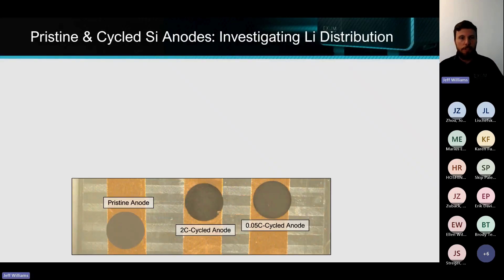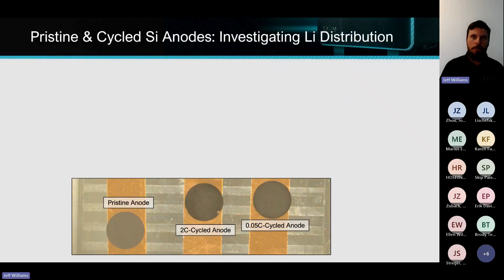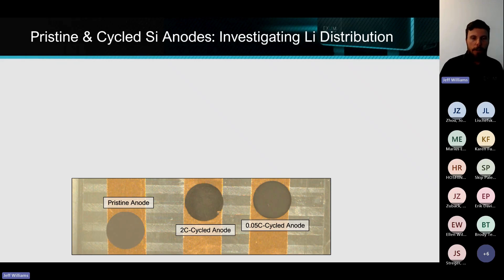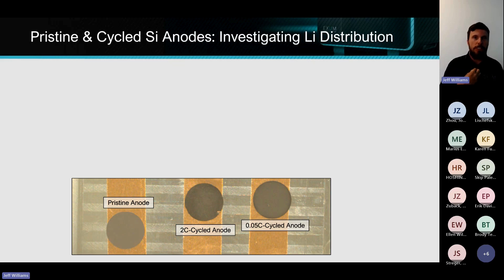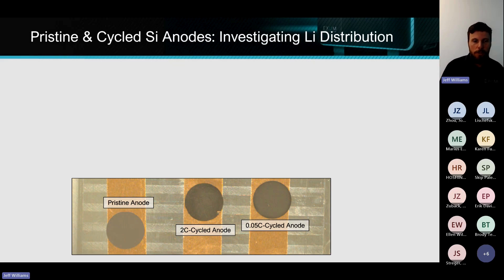On the left here we have a pristine anode. This is a silicon anode — kind of one of the sexiest materials in the battery space right now, and really where a lot of work is being done to commercialize this. We're trying to accelerate this commercialization and help people understand how to use this.